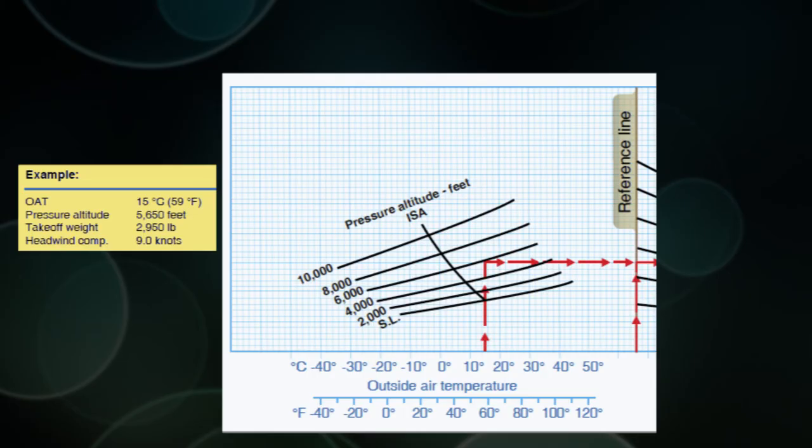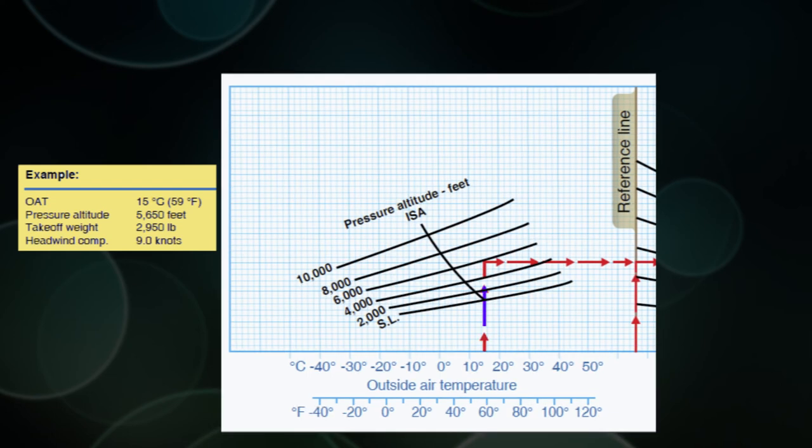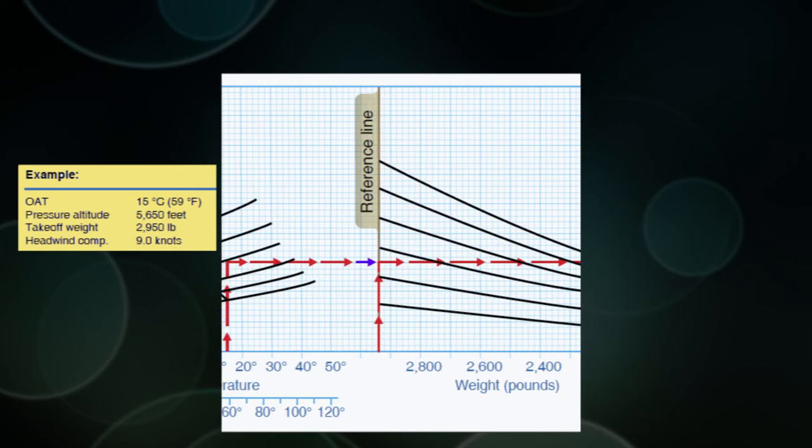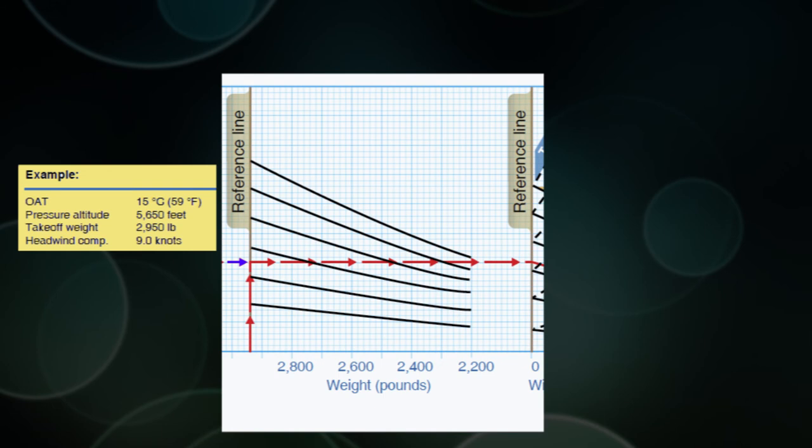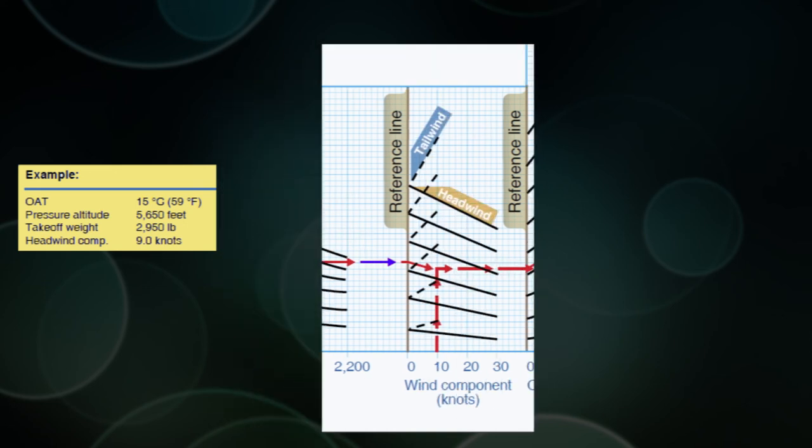So now looking at this chart, we can follow the temperature on the red line there from the bottom until it meets our pressure altitude. And our pressure altitude is 5,650. Once those two lines meet, we can run right across over to the next reference line, and that's for weight. And our weight is 2,950, which I'm assuming is the very left-hand side. So we don't have to do anything. We don't have to follow any sort of lines. We're going right straight across to the next reference line.